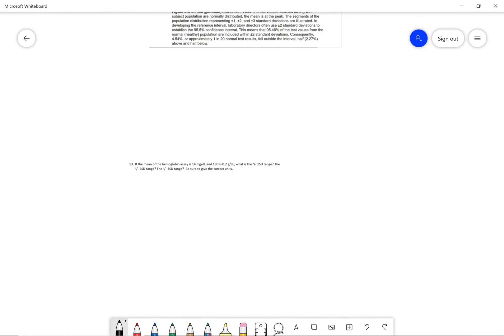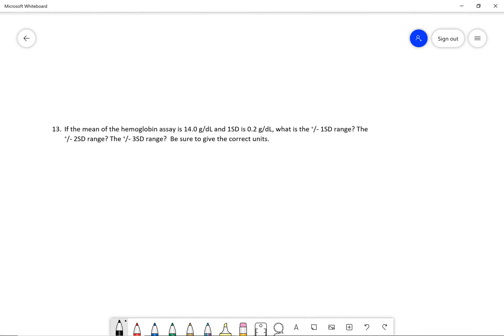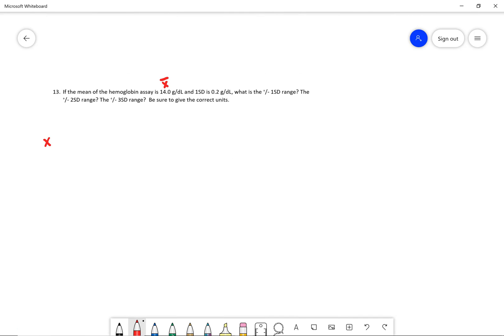So now let's go to the problem that I have for you all. It's a hematology-related quality control range. And it says if the mean of the hemoglobin assay is 14.0 grams per deciliter and 1 SD is 0.2 grams per deciliter, what is the plus or minus 1 SD range? What is the plus or minus 2 SD range? The plus or minus 3. And then be sure to give your correct units. I'm a stickler for units, so make sure you always add those in there. So the mean would be this 14.0 grams per deciliter. Your mean is equal to 14.0 grams per deciliter. And then 1 SD is equal to 0.2 grams per deciliter.